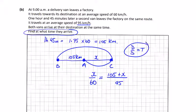So we're going to get 95x is equal to 6,300 plus 60x. So we're going to get 35x is equal to 6,300. So x is equal to 180.